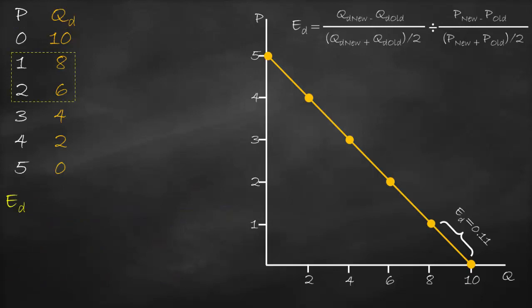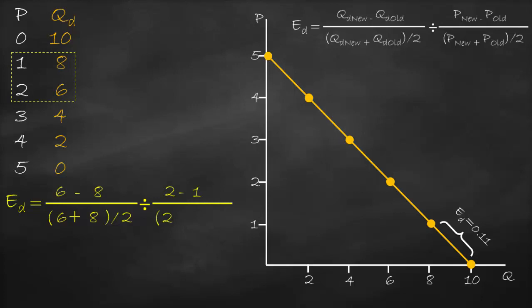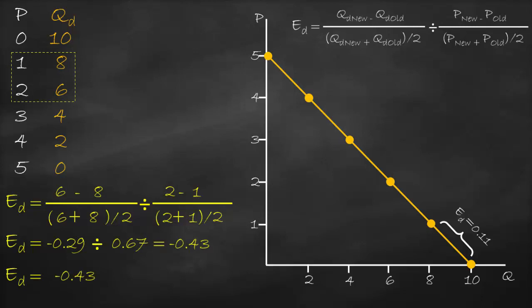Now let's calculate price elasticity of demand if price increases from 1 to 2 using the same midpoint formula. New quantity demanded is 6 minus 8, divided by its average (6 plus 8) divided by 2, divided by new price 2 minus old price 1, divided by the average (2 plus 1) divided by 2. This gives us negative 0.29 divided by 0.67, which equals negative 0.43.